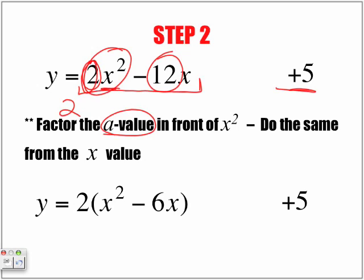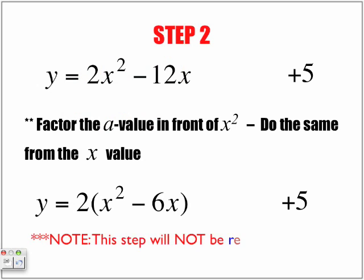2 has been factored out from the x squared. So within brackets, now we're left with x squared minus 6x. And again, as we said, the plus 5, we're going to ignore that.